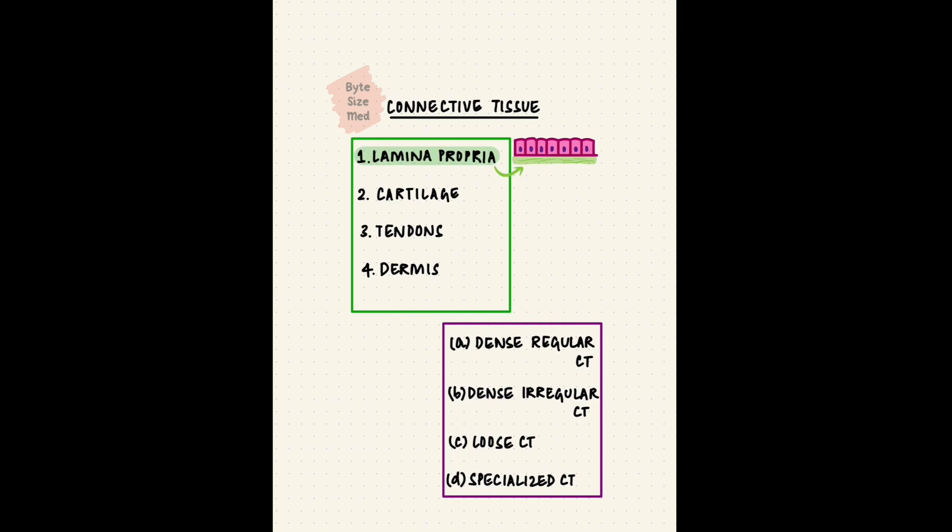The lamina propria is loose connective tissue. The dermis of skin is dense connective tissue. It's dense irregular. Tendons are dense regular connective tissue, and cartilage is a specialized form of connective tissue.